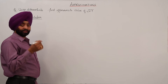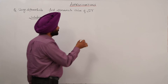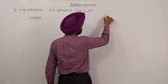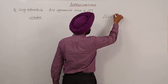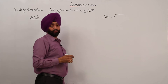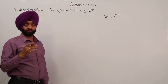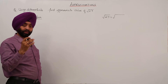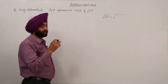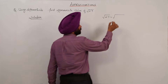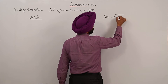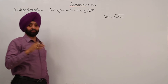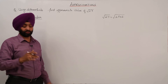First step is: just write under root 27 — what is the nearest value? The nearest value is a number whose square is a whole number. For example, here we have 25 plus 2. We know that 25 is 5 squared. Now this is the thing we have to judge.